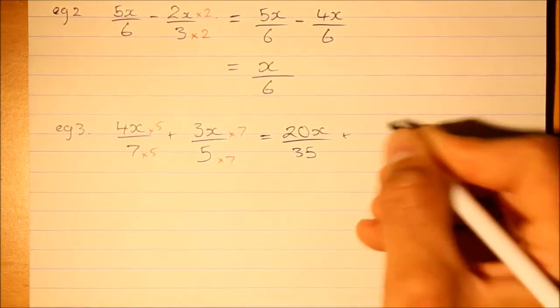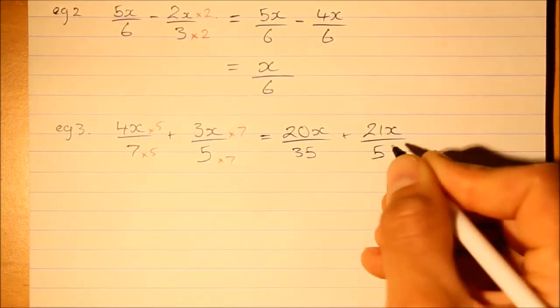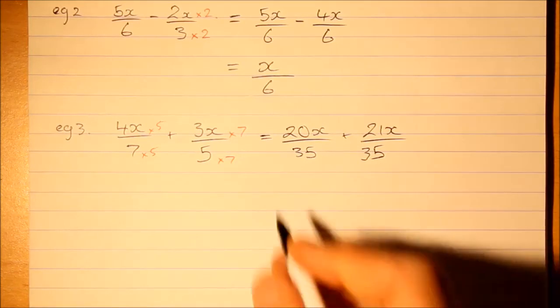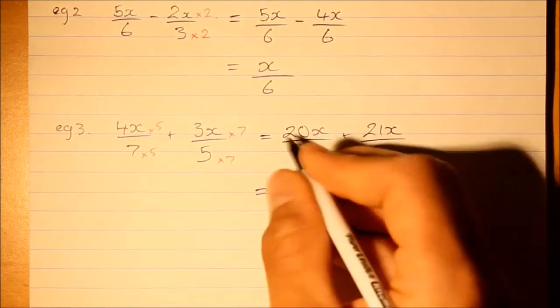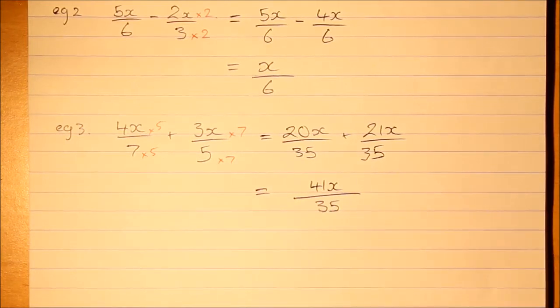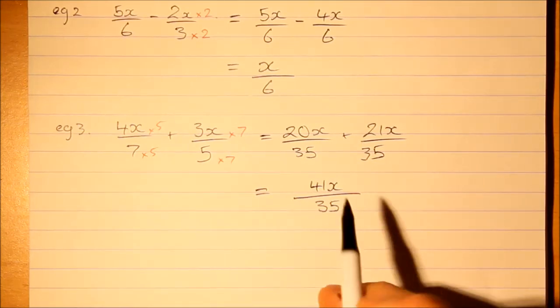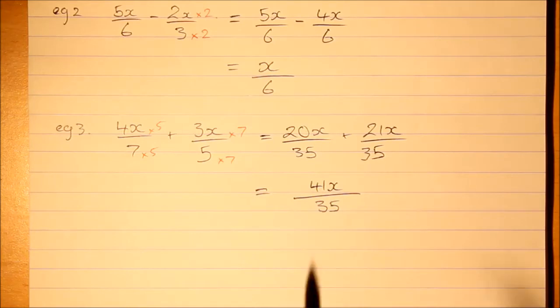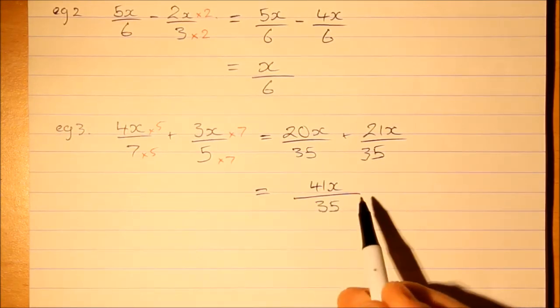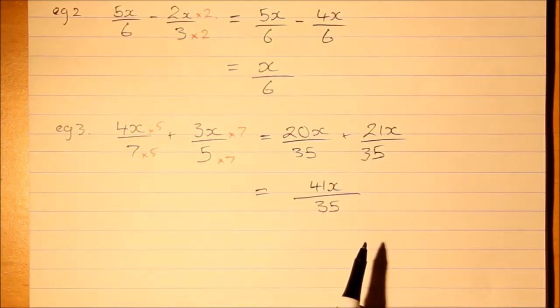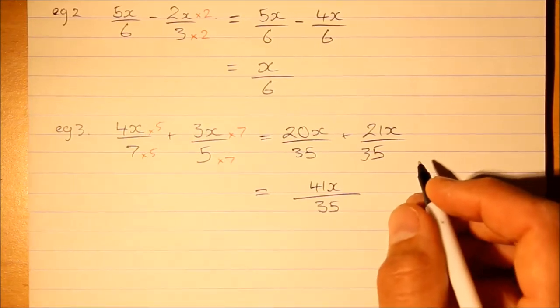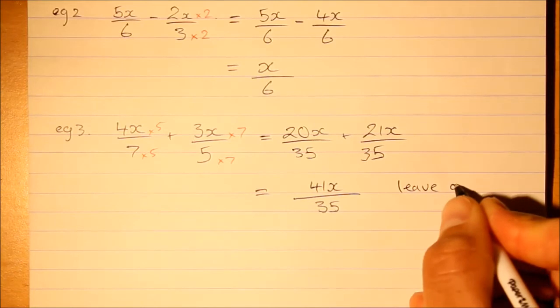Let's multiply it by 5 here, multiply by 7. That gives us 20x over 35 plus 15x over 35, which equals 41x over 35. There is one other convention I should mention: the numerator, you would leave this fraction as an improper fraction. There's no need to convert this to a mixed numeral. For algebraic fractions, it's just the way it's done, so less work for you to do. Just leave as improper.